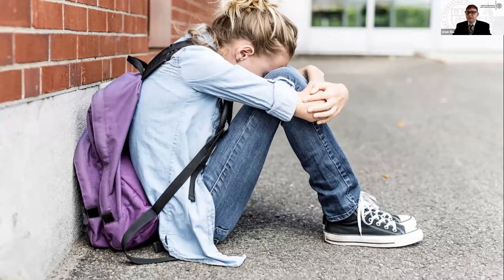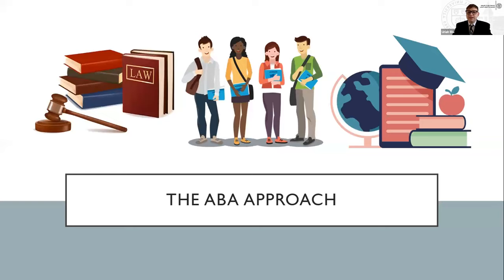Uriah used an ABA, or agent-based approach, when researching this topic. ABA is a method in systems thinking that focuses on individual agents and their behaviors and interactions within complex adaptive systems, also known as CASs. ABA proved to be a fitting method for examining systems related to the mental health of LGBTQ+ youth, helping break down a complex system with many different actors into something more digestible.